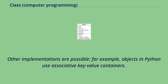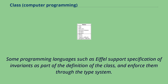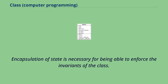In most languages, the structure defined by the class determines the layout of the memory used by its instances. Other implementations are possible. For example, objects in Python use associative key-value containers. Some programming languages such as Eiffel support specification of invariants as part of the definition of the class, and enforce them through the type system. Encapsulation of state is necessary for being able to enforce the invariants of the class.